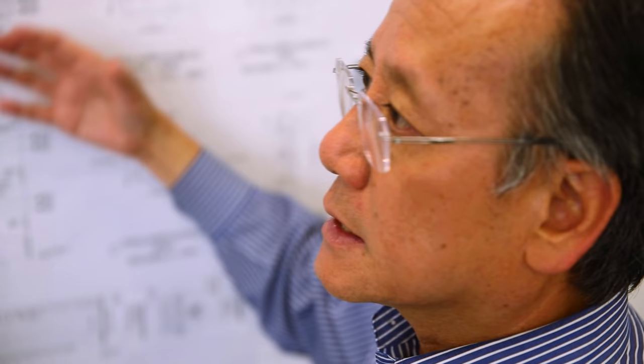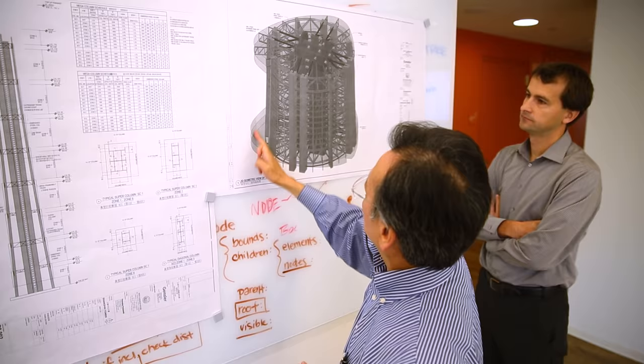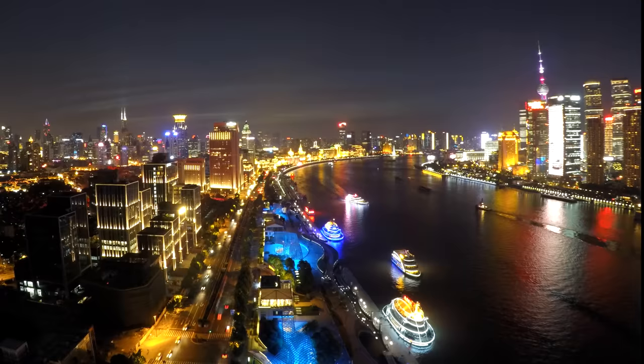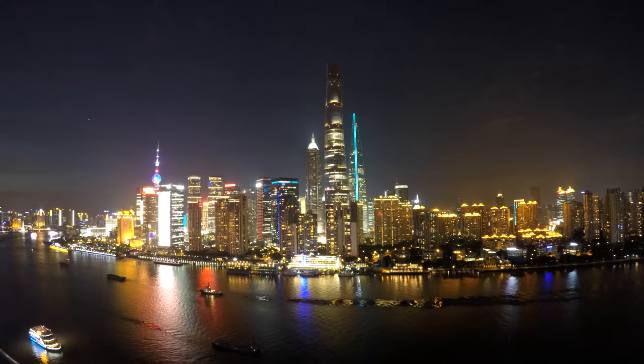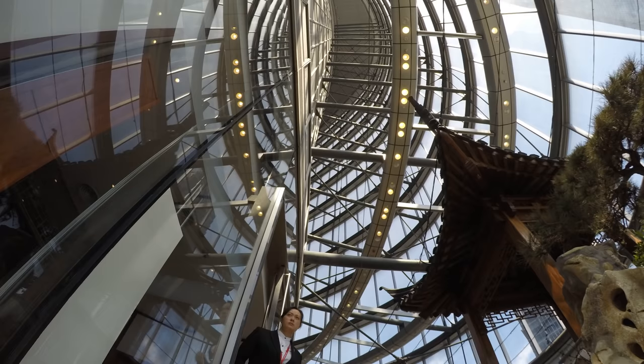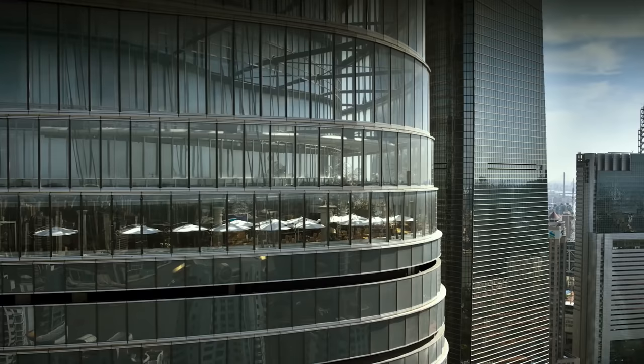That withstand the extreme forces of mother nature. At the same time, as cities grow, engineers also need to keep in touch with nature. The Shanghai Tower is filled with green parks in the sky — these garden buffer zones insulate the tower, reducing energy costs and giving the 16,000 people a breath of fresh air.